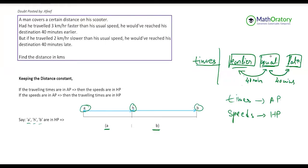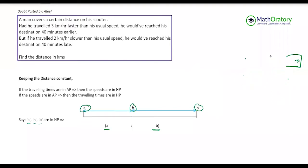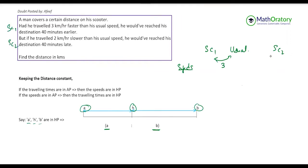Since the speeds are in HP, let's look at things from the perspective of the speeds. We have the usual speed, scenario one (3 km/h faster), and scenario two (2 km/h slower). The difference in speeds is 3 km/h between scenario one and the usual speed, and 2 km/h between the usual speed and scenario two. By the HP property, scenario one speed and scenario two speed are in the ratio 3 : 2.